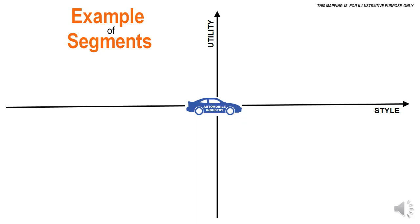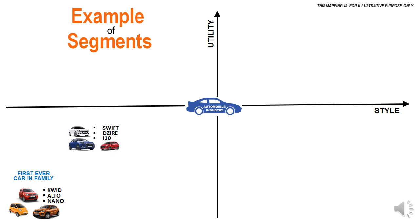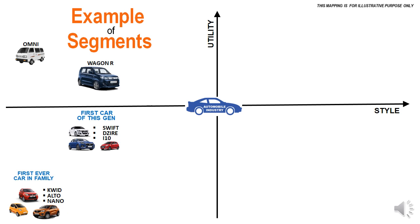Let us understand segmentation by looking at the automobile market. We are plotting utility versus style. In one corner you find the Quitt, the Alto, the Nano — fairly low in styling and fairly low in utility, but the very first car a new family purchases. Move diagonally — slightly more utility, slightly more style — and you find the first car this generation is going to buy: the Swift, the Desire, the i10. Straight upwards in utility you get the WagonR, and sweeping along the style axis you get the sedans.